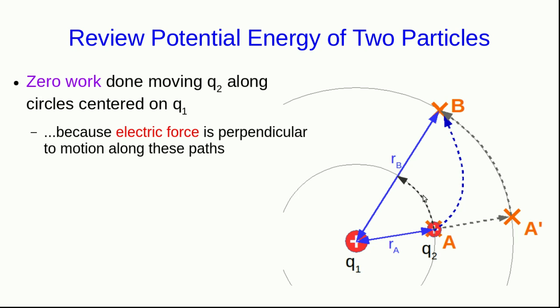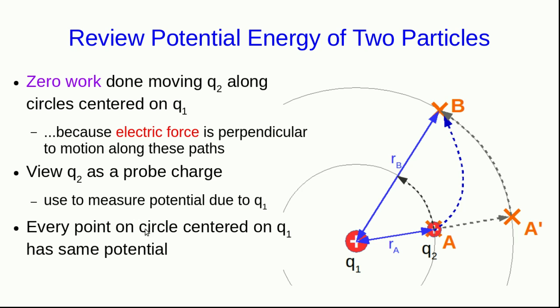So let's view Q2 as a probe charge. We're going to use it to think about the potential in this region around Q1. We note that because zero work is done on it as it moves along this curve, that means equivalently in the system including both Q1 and Q2, the potential energy, the electric potential energy, does not change as we move Q2 along this circle. And so since we get the potential by just dividing the potential energy by Q2, we see that the potential due to Q1 is the same everywhere on this curve from A' to B, or on this inner circle.